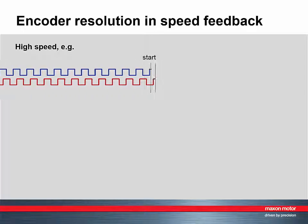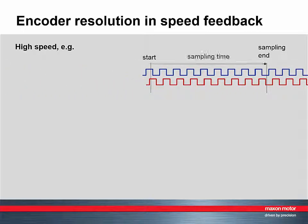However, what are the main encoder selection rules for speed feedback? In the speed controller, velocity evaluation is usually done by counting the position change in number of states per cycle time.